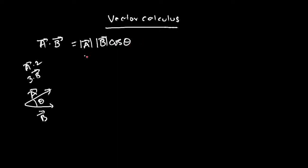The dot product of two vectors always yields a scalar quantity — this is very important. You will encounter dot product and cross product many times in a field theory course, so you need to understand that when you take the dot product of two vectors, you always get a scalar quantity.